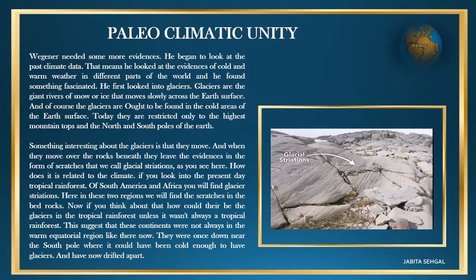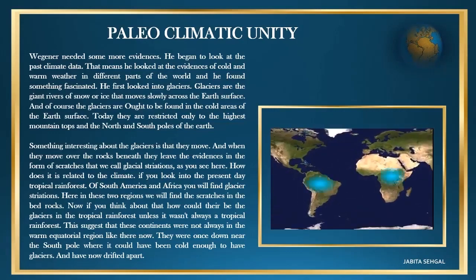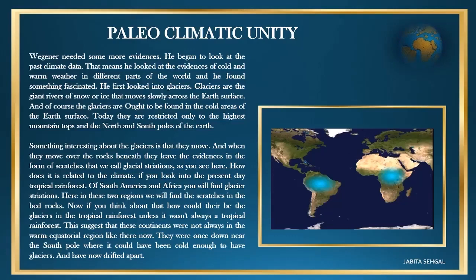If you look into the present-day tropical rainforests of South America and Africa, you will find glacial striations — scratches in the bedrock. Now, how could there be glaciers in tropical rainforests? This suggests that these continents were not always in the warm equatorial region like they are now. They were once down near the south pole, where it was cold enough to have glaciers, and have now drifted apart.